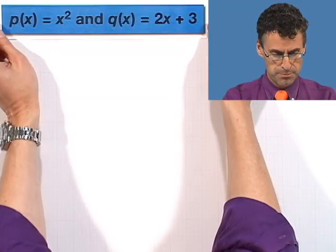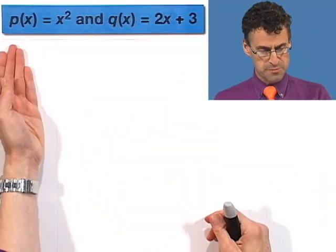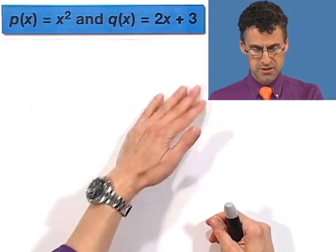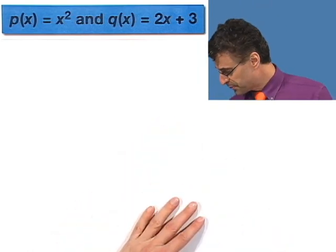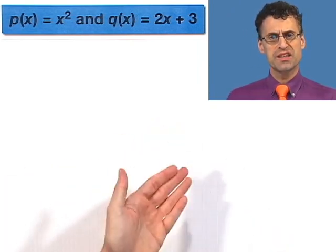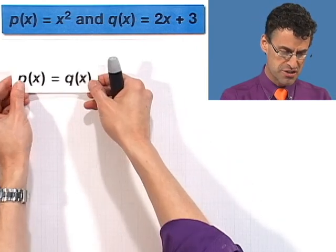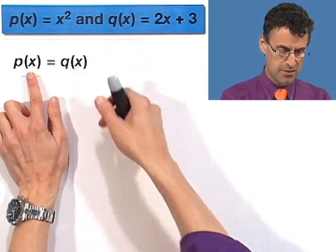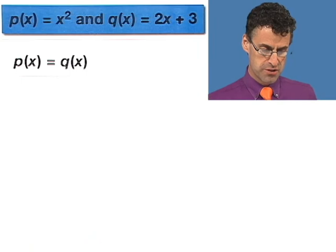Now, there's another kind of thing that we're often asked in life, which is we'll be given two functions. In this case, p(x) equals x squared, q(x) equals 2x plus 3. And they'll ask us to find the values for x for which these two functions are equal.